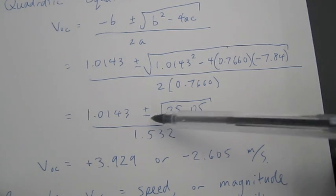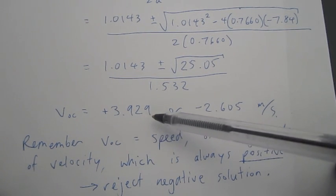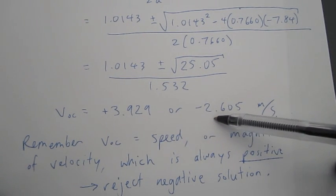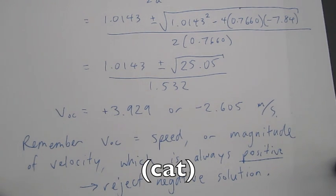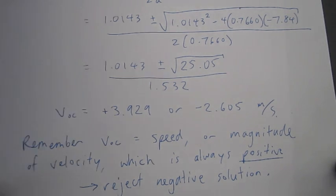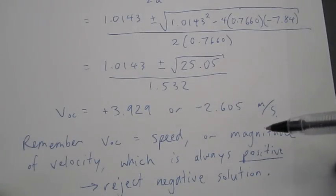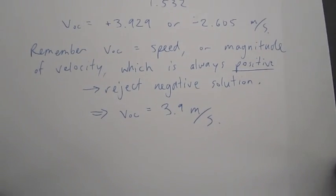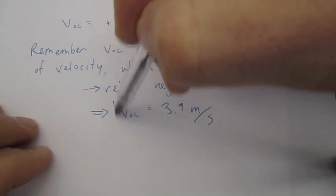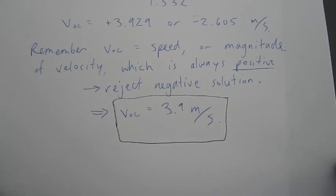The square root of 25 is greater than 1, so one of the solutions is positive, 3.929. The other solution is negative 2.605 meters per second. So, we are solving for the speed of the mouse, meaning that it has to be positive from this. Having a negative speed isn't really going to make sense. So, I reject this solution, and would say that the velocity is 3.9 meters per second. Sorry, the initial speed is 3.9 meters per second, and the cat will catch the mouse.